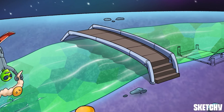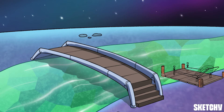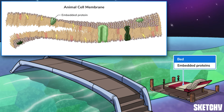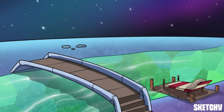This bed on the riverbank represents embedded proteins, which, as you might have guessed, are embedded into the surface of the plasma membrane. They can either be inside the cell on the cytoplasmic side, or outside the cell on the extracellular side of the membrane. Both transmembrane and embedded proteins are referred to as integral proteins because they're built into the plasma membrane.